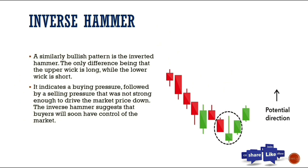Next is the inverse hammer. The inverse hammer is also a bullish pattern, similar to the hammer, but this one has a long upper wick and a small body. It is also a reversal candle — if we see this forming at the low of the market, the potential direction is to the upside.